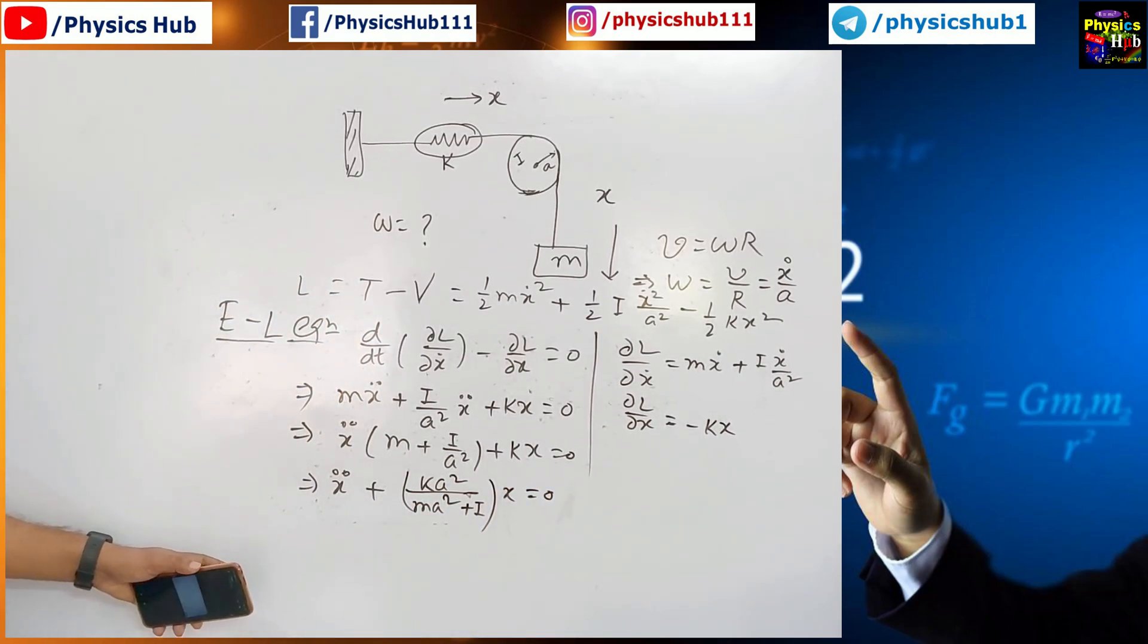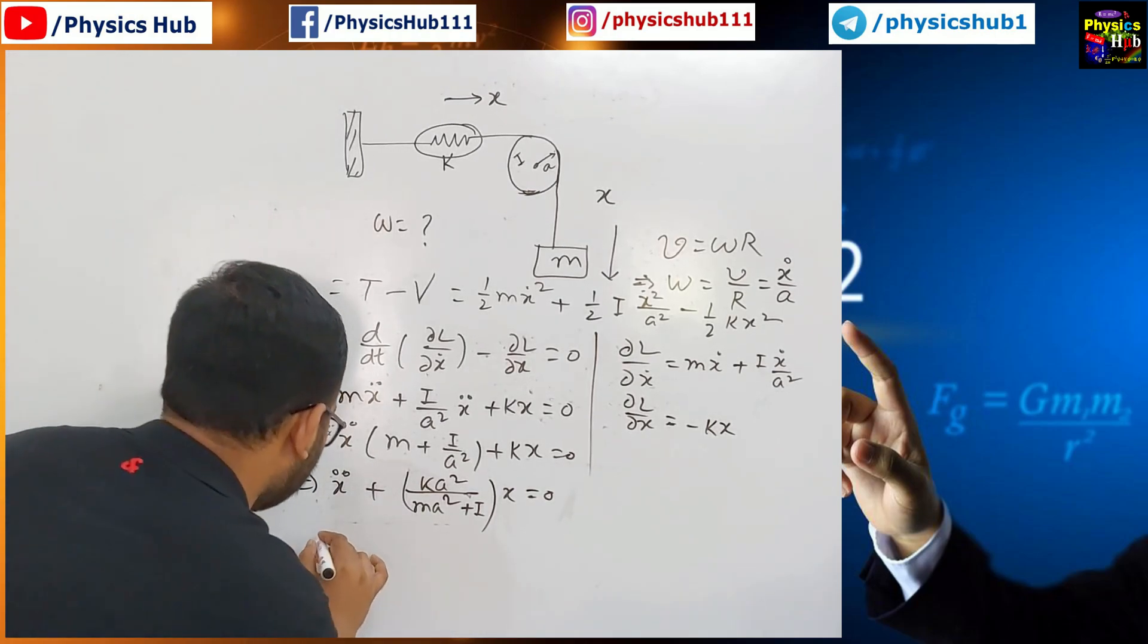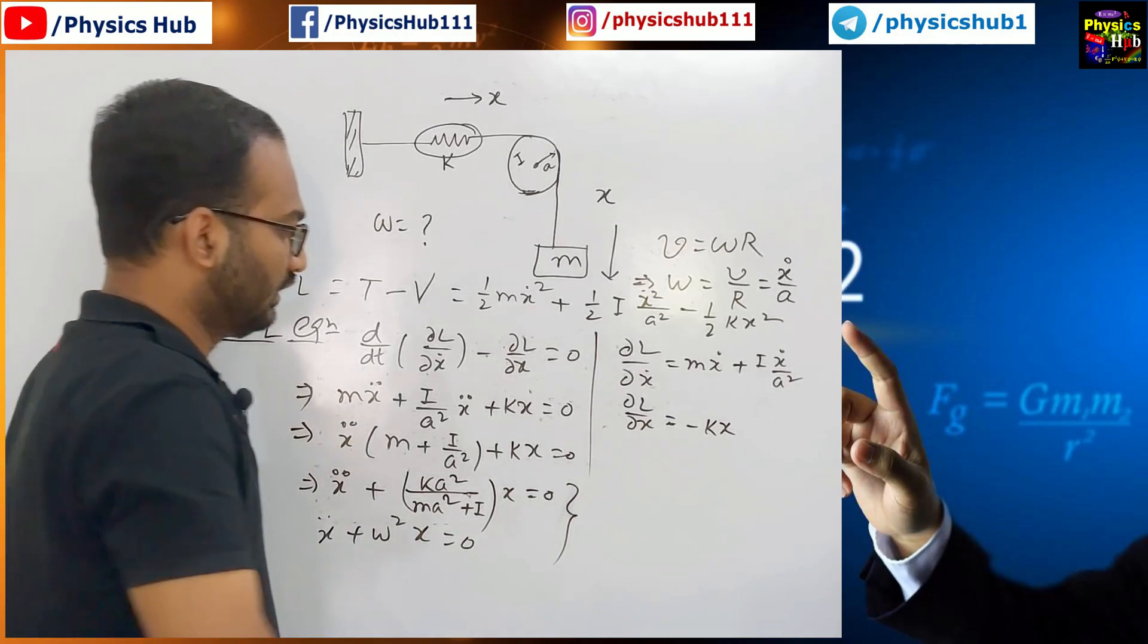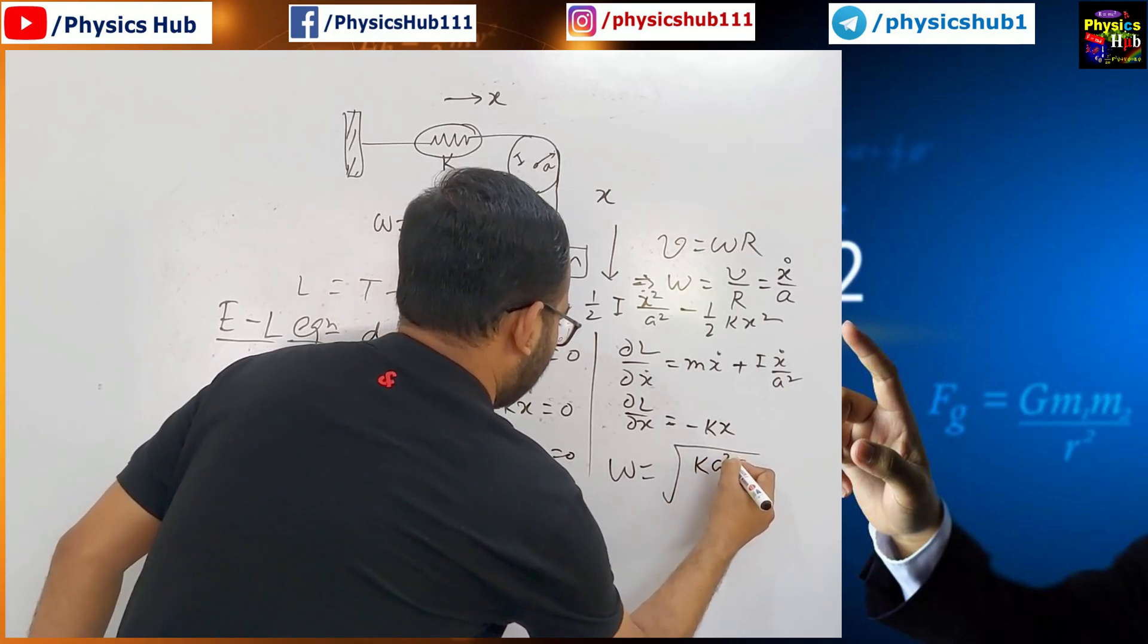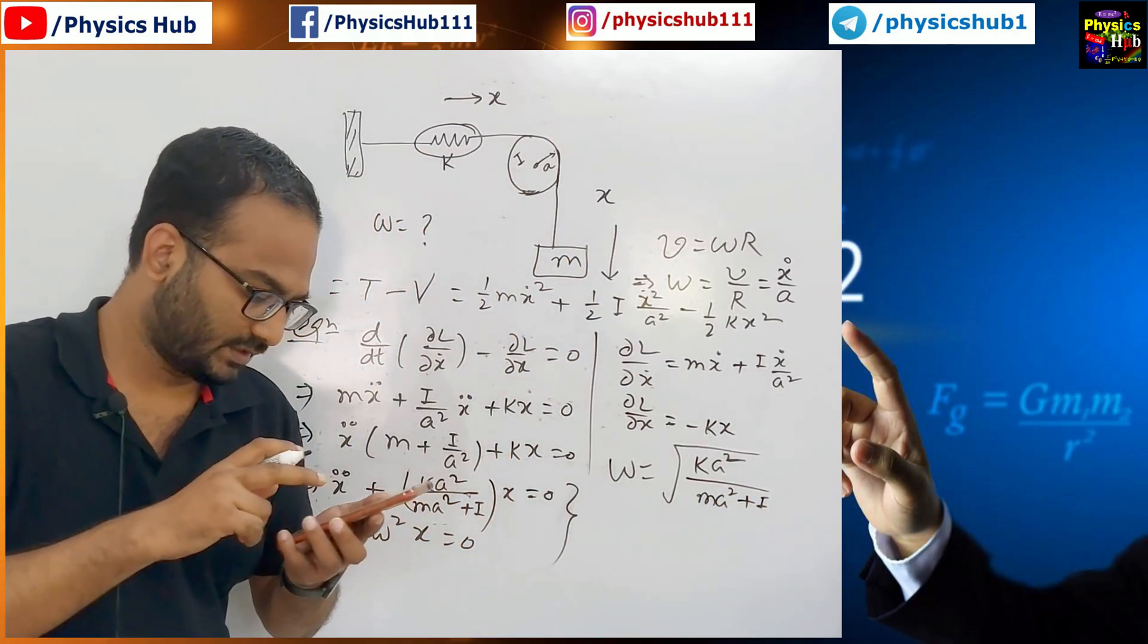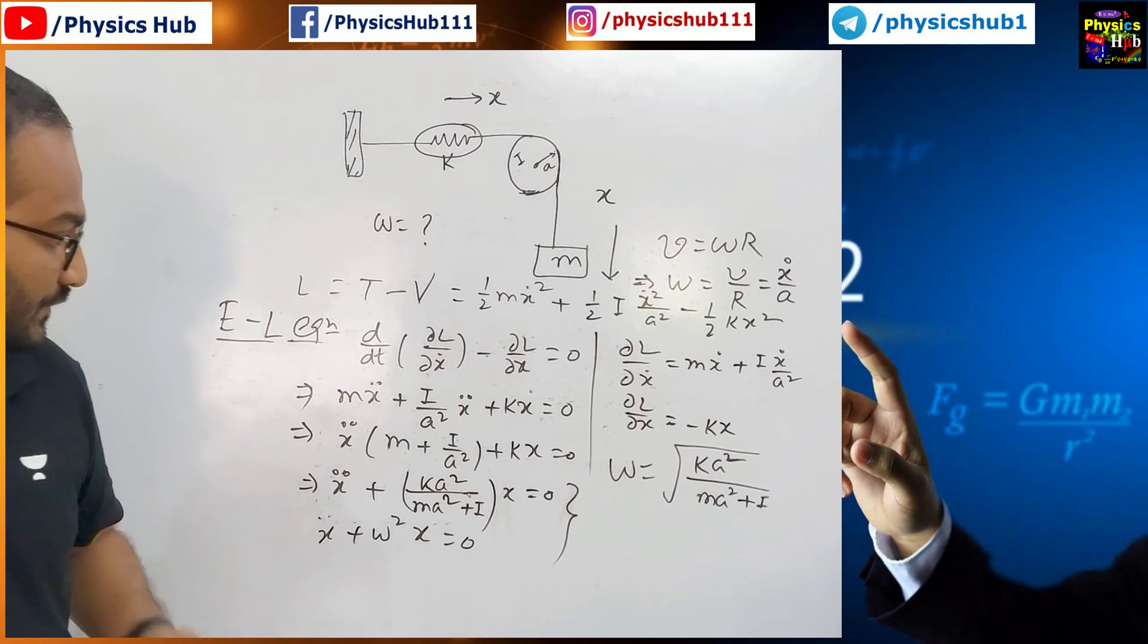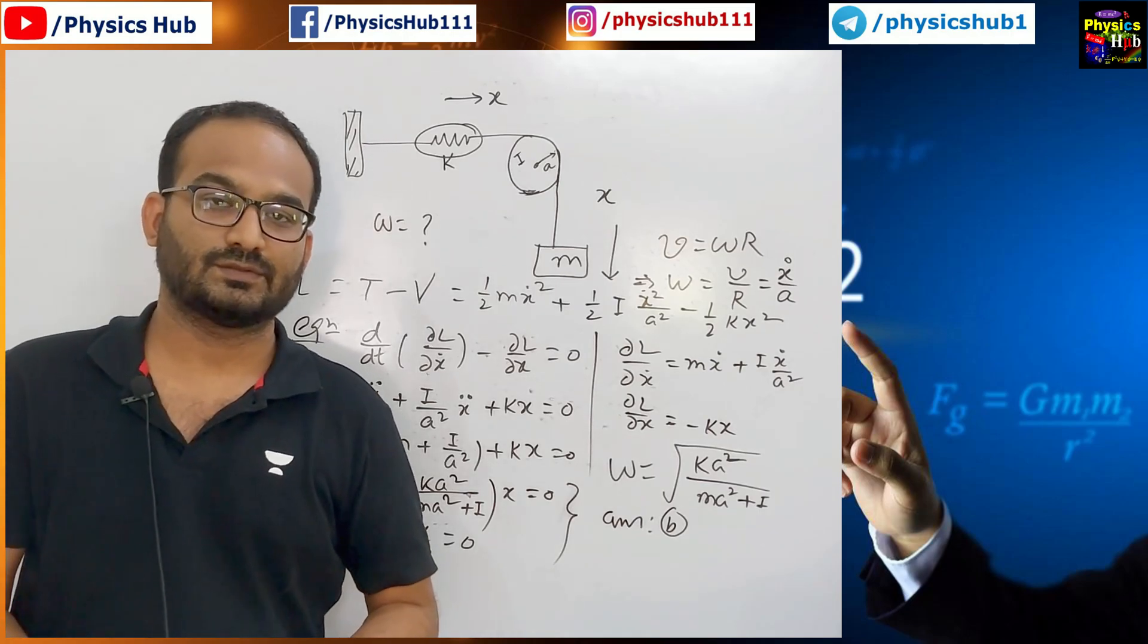Now, you see, this is similar to some equation, simple harmonic oscillator, simple harmonic motion. So, you know that x double dot plus omega square x equals zero. Now, compare these two equations. By comparing these two equations, you can easily get the value of omega, which equals root over K A square divided by m A square plus I. See, if there is any option matching with it. So, if you match it closely, it is matching with option b. Yes. So, it is matching with option b. So, in this way, easily, you can solve this particular problem.